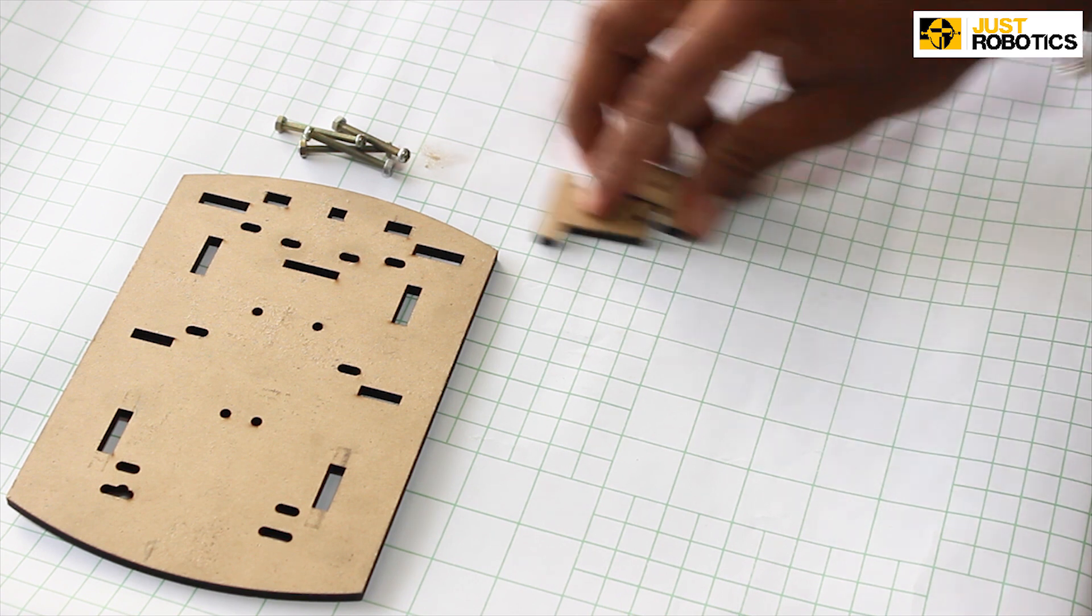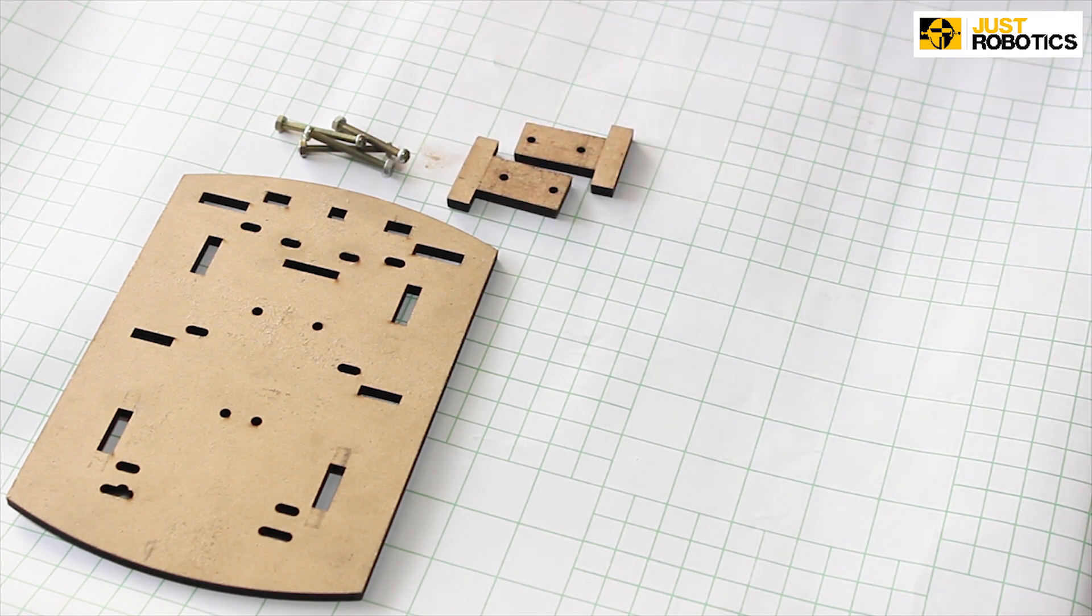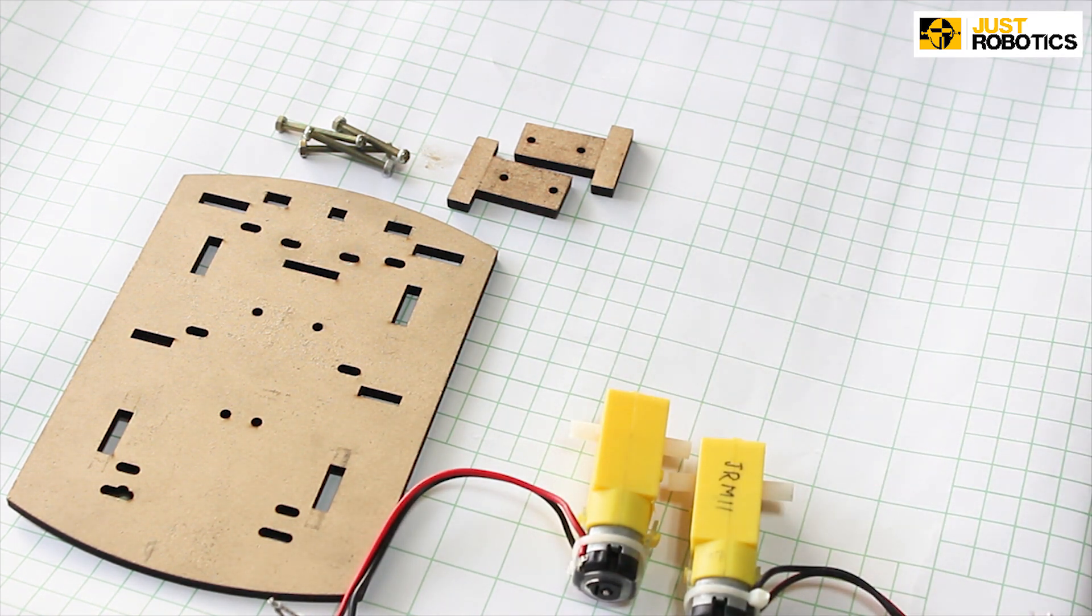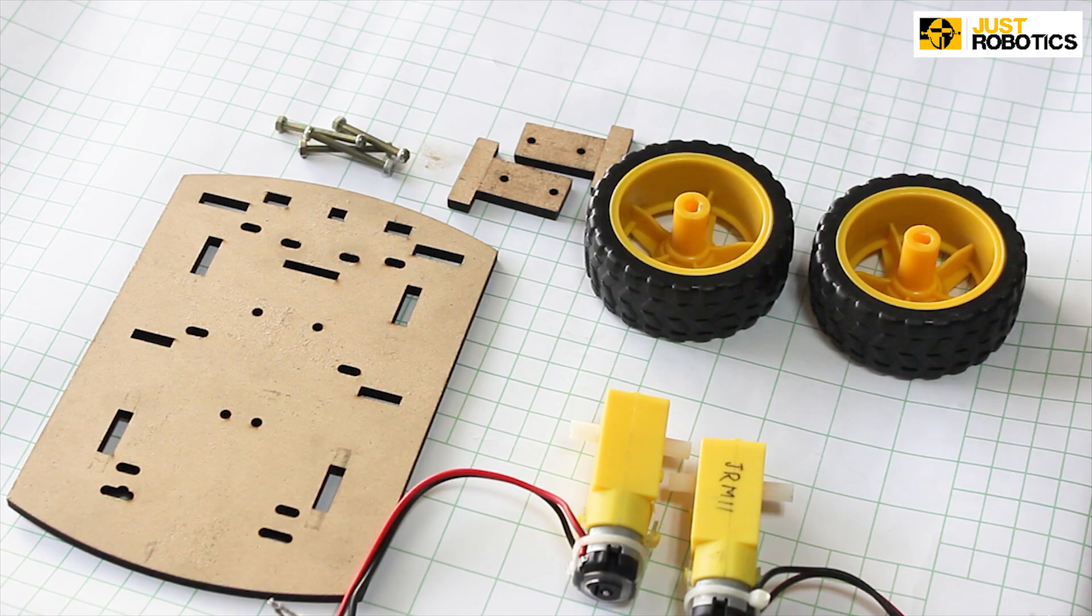Let's now take two T-clamps and two of our BO motors. Now all we need for the assembly are two wheels. Let's get into it.